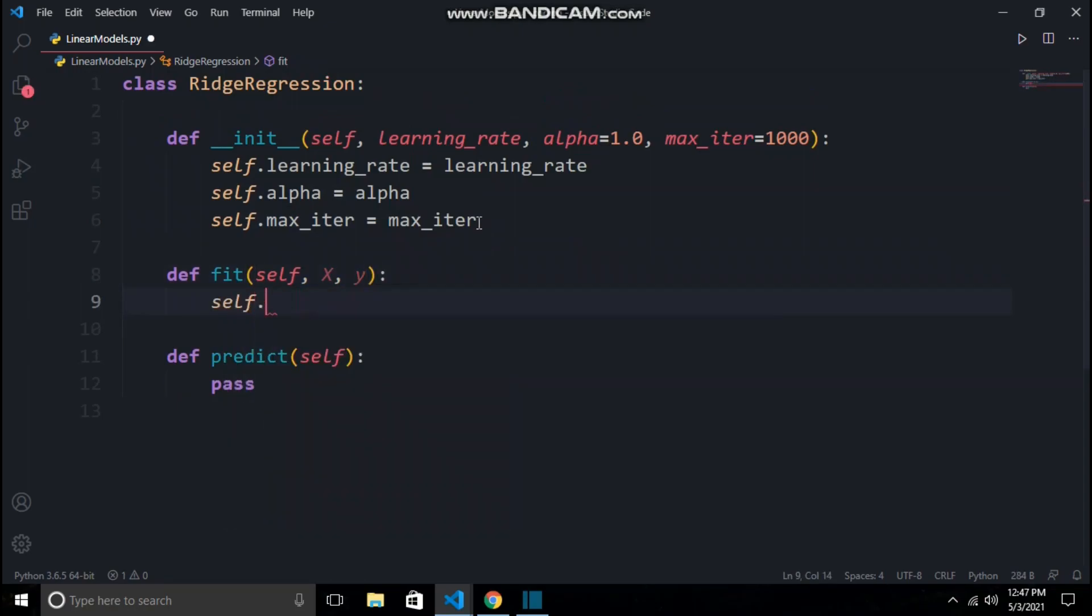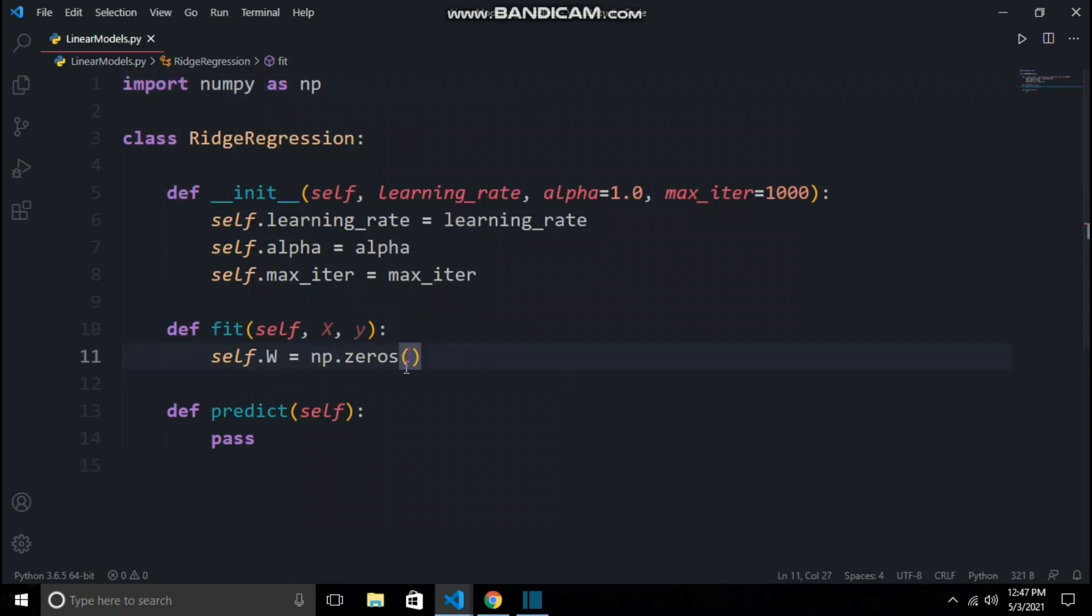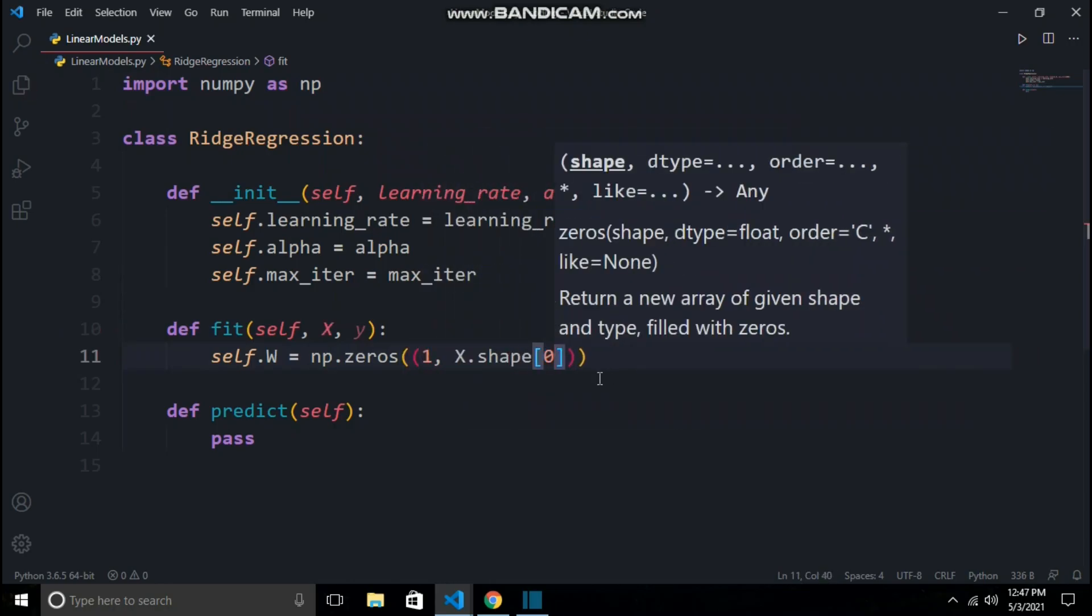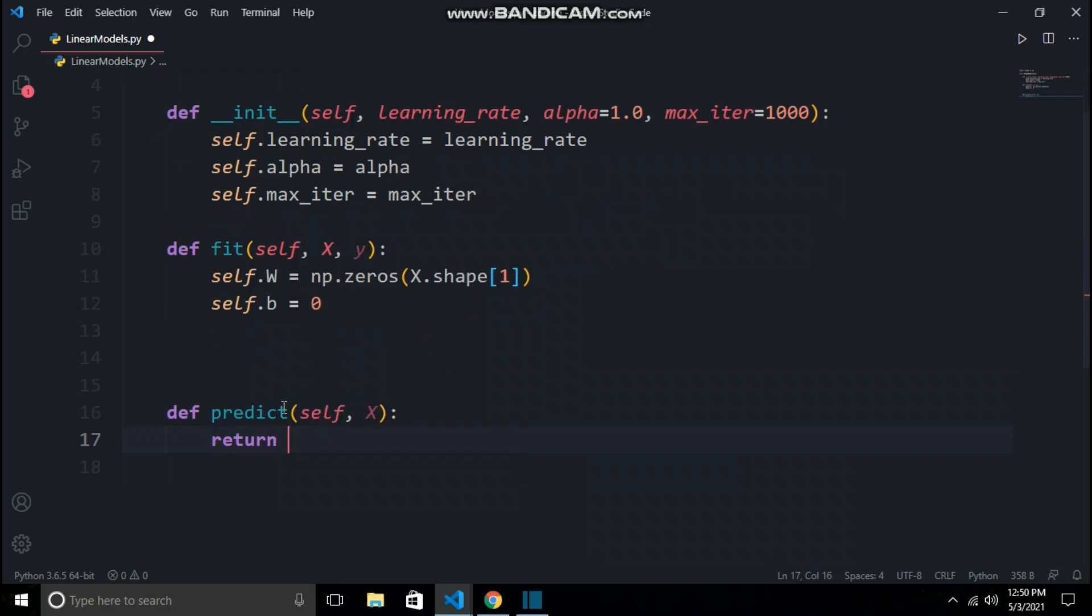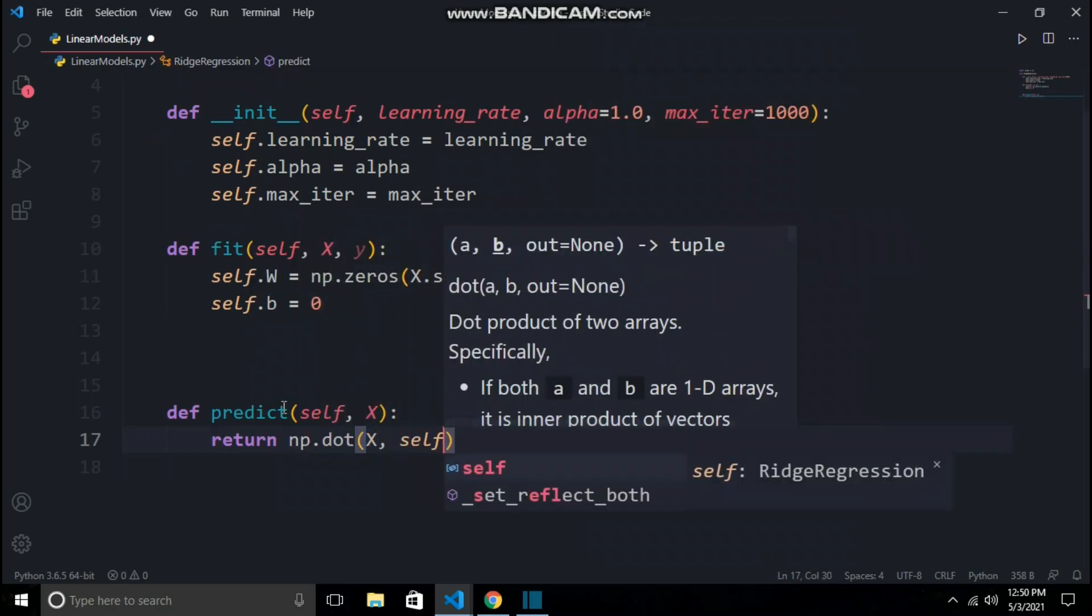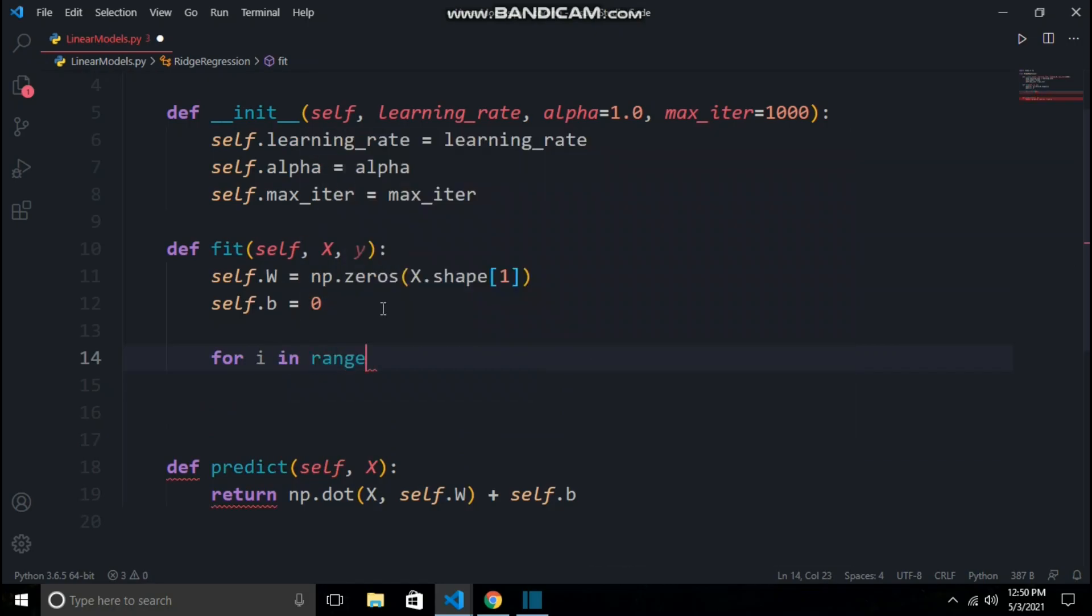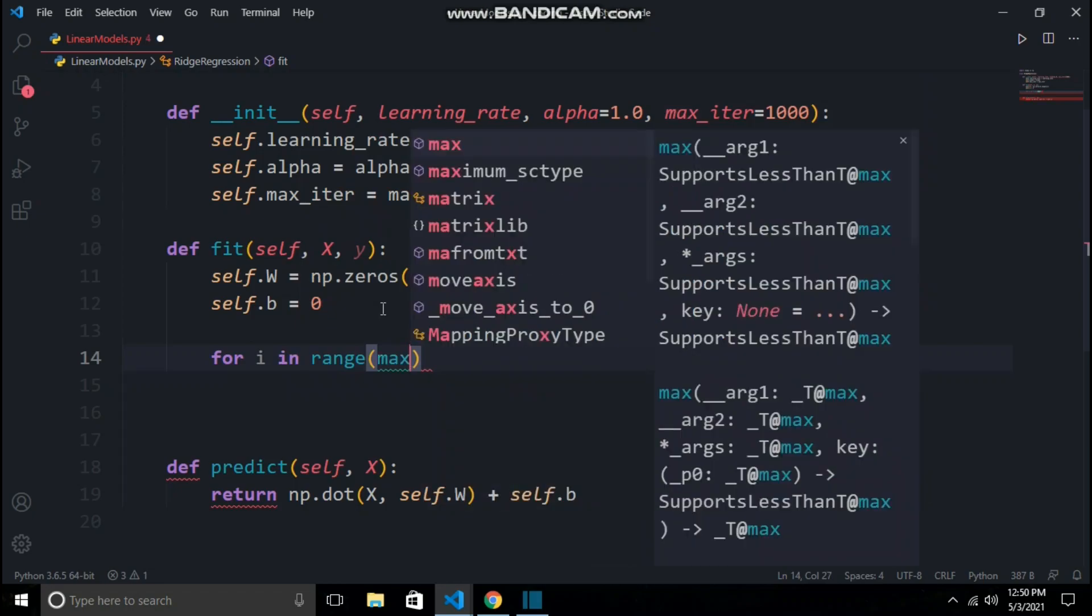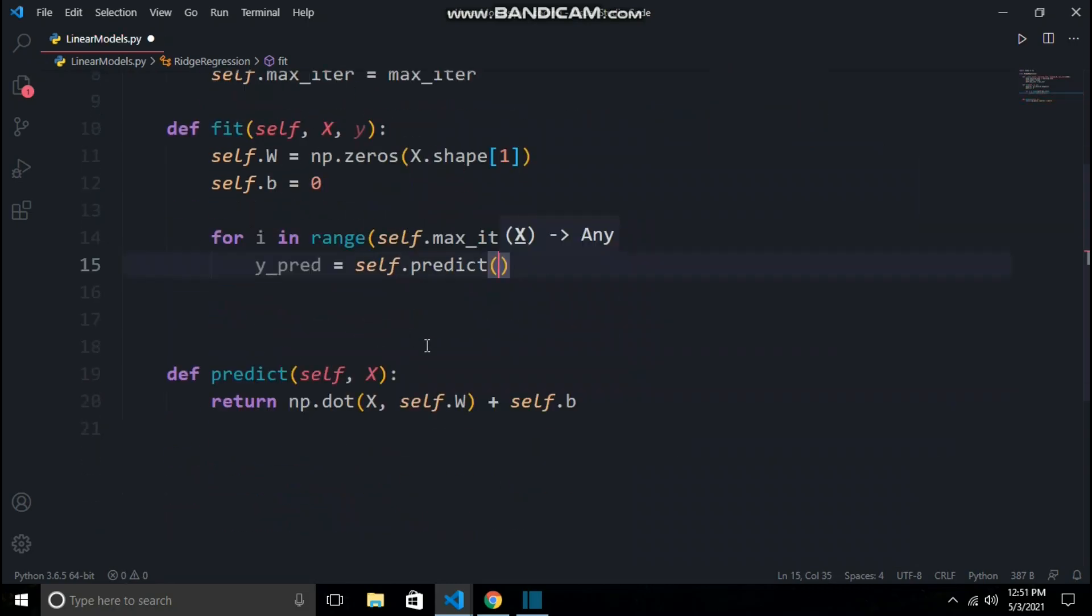Fit function takes x and y values for training purposes, and then we will initialize our weights and biases as zero. As training proceeds, our algorithm will try to find the optimal values of these. Now we will write predict function as we will need it in fit function. Predict will return the dot product of x and weight plus the bias. Now it's time to run a for loop. This for loop will run max_iter times, meaning if the max_iter value is set to 2000, then it will run 2000 times. In every iteration we will call the predict function and store the predicted values by our model in the variable y_pred.